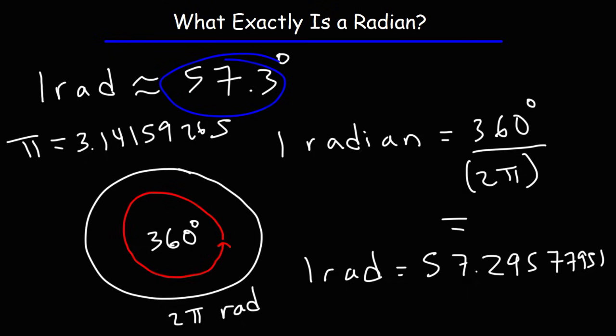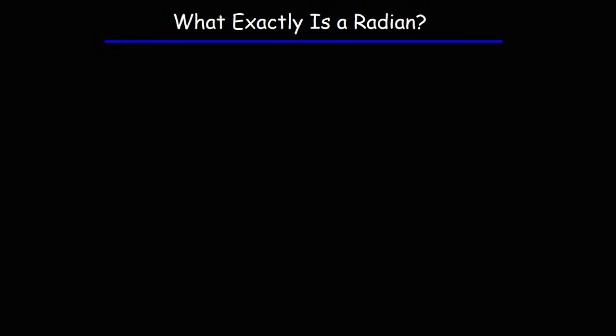It's an angle measure. It's a unit of angle. Now that we know what a radian is, how did we get that number in the first place? Where does it come from? Well, let's talk about that.